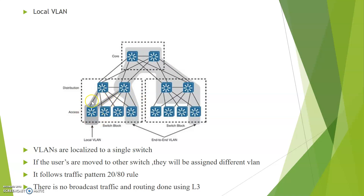Since the VLANs are localized to a single switch, routing is done using Layer 3. To summarize: end-to-end VLANs are distributed throughout the network, so traffic must be extended from one end to the other — the disadvantage being more broadcast traffic. Local VLANs are easier to configure, VLANs are localized to a single switch, and routing is simpler from access to distribution to core using Layer 3. End-to-end VLANs follow the traffic pattern 80 by 20, while local VLANs follow the traffic pattern 20 by 80.